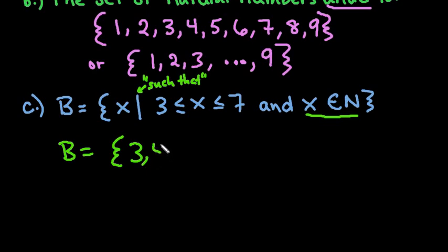So we have {3, 4, 5, 6, 7} as our values. If it did not have the equal sign underneath, then you would not include the 3 and the 7.